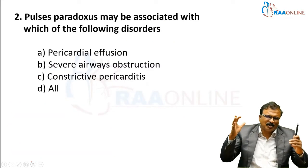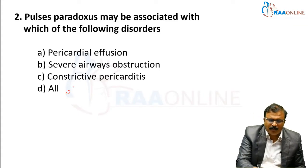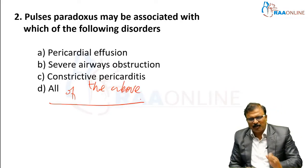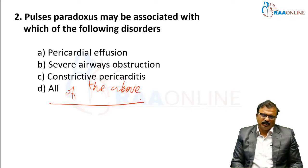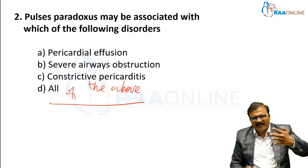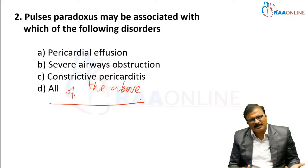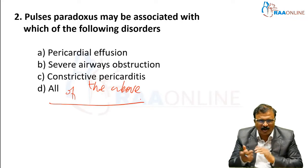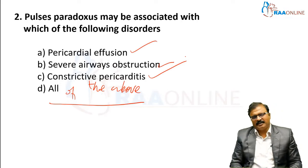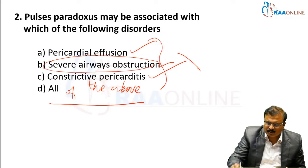Pulsus paradoxus is associated with the following conditions. A significant drop in systolic BP during inspiration of more than 10 mmHg is pulsus paradoxus. The pulse is felt only during expiration, not inspiration. It is seen in severe airway obstruction, pericardial effusion with tamponade, and tension pneumothorax.